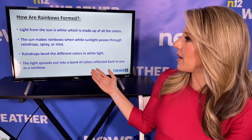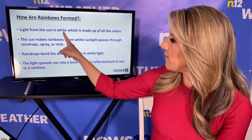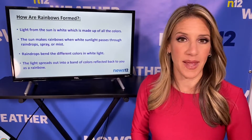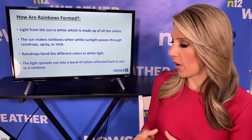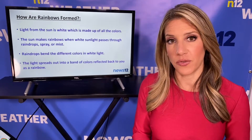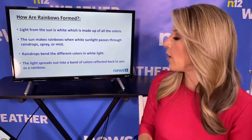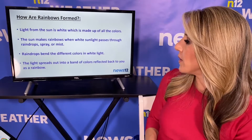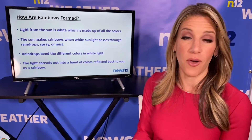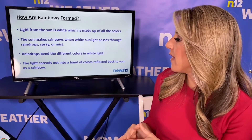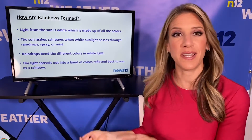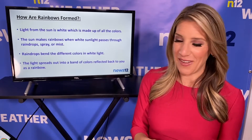How are rainbows formed? Light from the sun is white, and that white light is made up of all the colors of the rainbow. The sun makes a rainbow when that white light passes through either a raindrop, spray, or mist. Raindrops bend the different colors in the white light, and then that light spreads out into a band of colors and is reflected back to us as a rainbow.